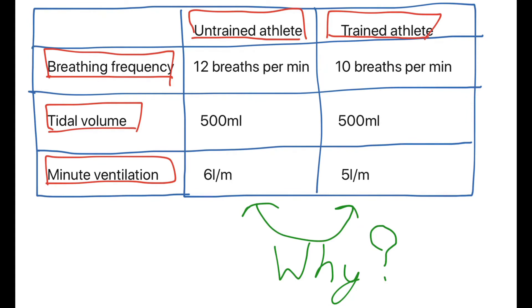On the last slide, let's look at some simple values to learn. The table shows breathing frequency, tidal volume, and minute ventilation for untrained and trained athletes. An untrained athlete has 12 breaths per minute, a tidal volume of 500 ml, and a minute ventilation of 6 litres per minute. A trained athlete has approximately 10 breaths per minute, a tidal volume of around 500 ml, but a lower minute ventilation of 5 litres per minute. This is because long-term aerobic training causes capillarisation around the lungs and more alveoli, making gas exchange more efficient — so a trained athlete gets more oxygen into the blood from a smaller volume of air.